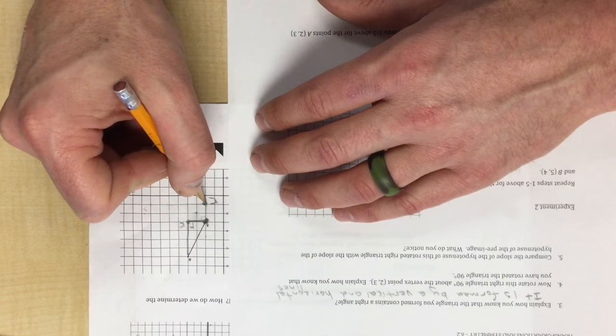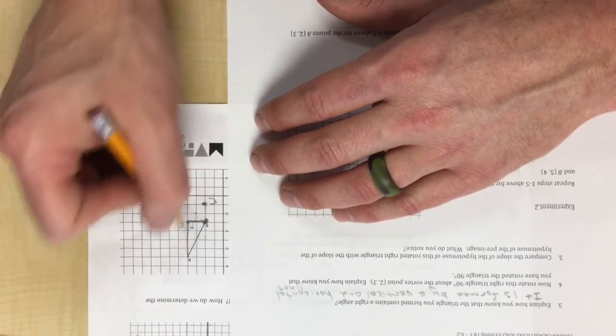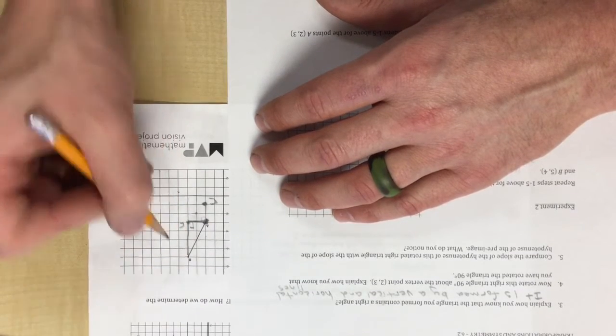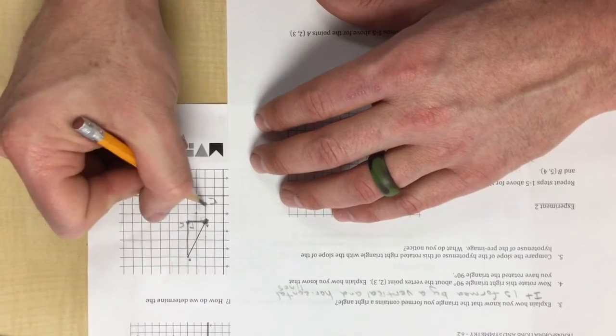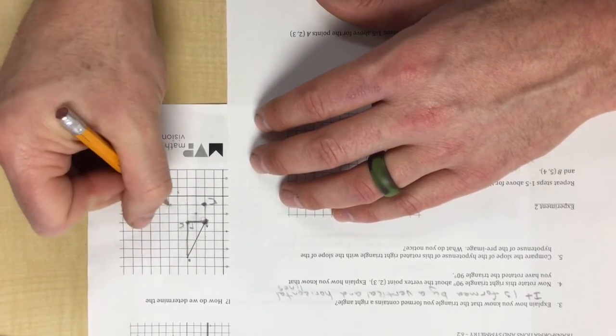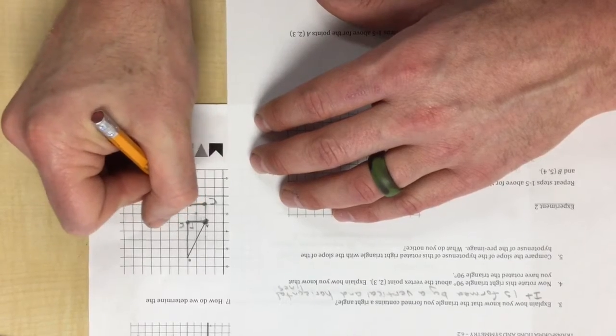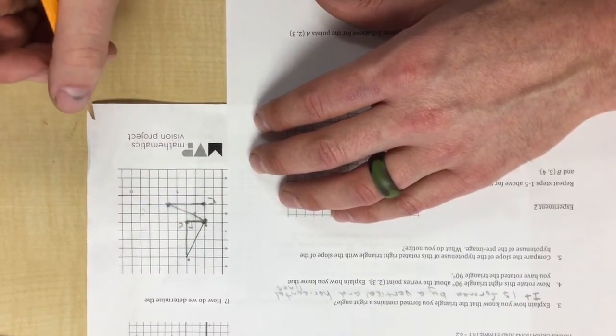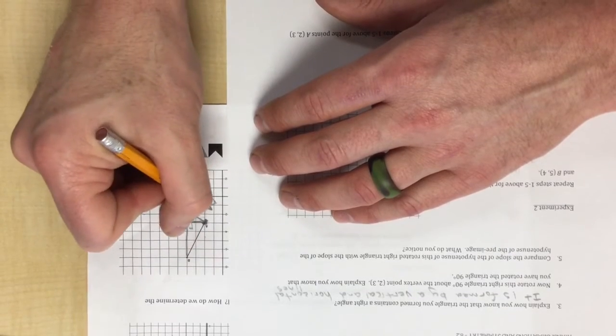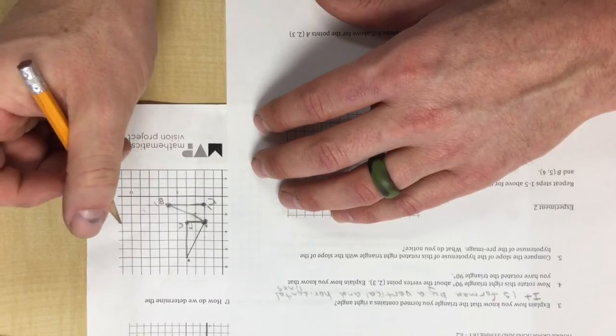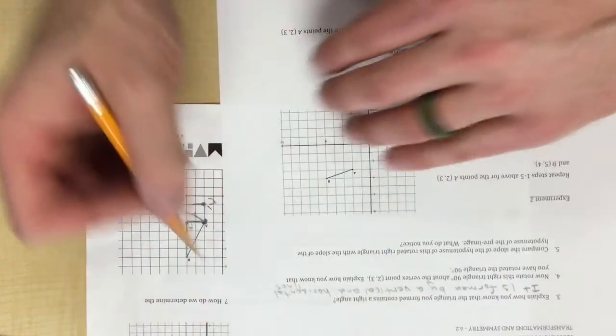And then you can see that the hypotenuse would come all the way down to here, and it must be a distance of four. So one, two, three, four. And here is the triangle rotated 90 degrees clockwise. This is A prime, this is C prime, and this is B prime.